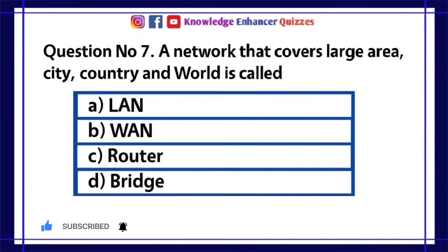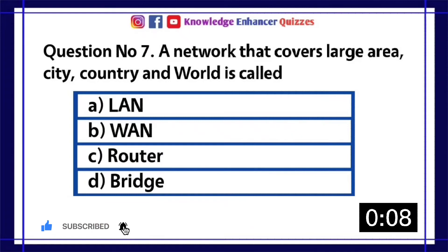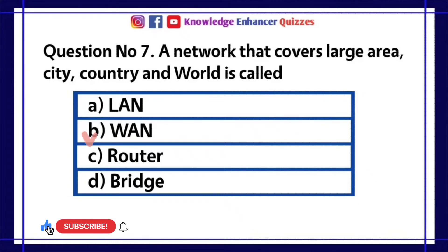Question number 7. A network that covers large area, city, country, and world is called. A LAN. B WAN. C router. D bridge. Option B is the right answer.